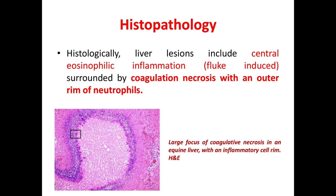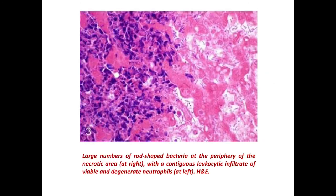Coming to histopathology. Histologically, liver lesions include central eosinophilic inflammation — that is fluke-induced — surrounded by coagulation necrosis with an outer rim of neutrophils. In this picture you can see a large focus of coagulative necrosis in an equine liver with an inflammatory cell rim stained with H&E. You can also see a large number of bacteria at the periphery of the necrotic area with a contiguous leukocytic infiltrate of viable and degenerate neutrophils at left, stained with H&E stain.